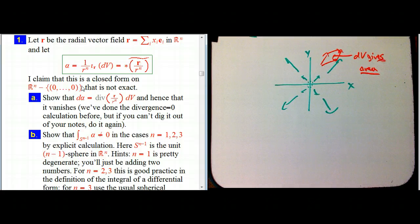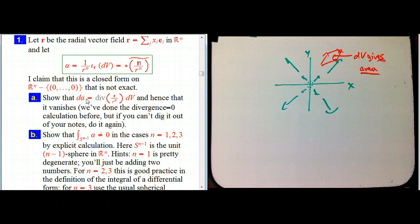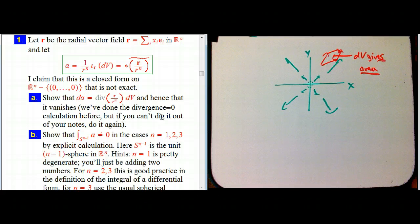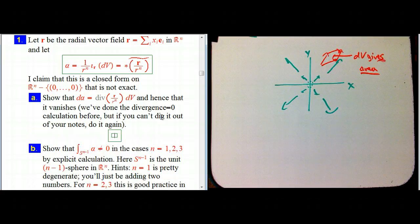Because we've divided by R^n, this is not going to be defined at the origin — it blows up there. That's why it could possibly be a closed form that's not exact: it's not defined on all of R^N, we've punctured the space, and we've seen that this has a very profound topological effect. So the first thing to do is to show that this is actually a closed form — that d alpha equals zero.